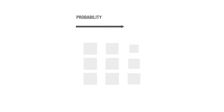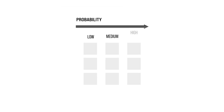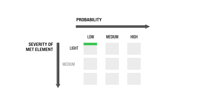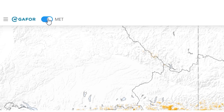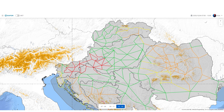Each weather polygon is defined by a probability of occurrence and severity or category of the phenomenon. For the most severe phenomena, even the slightest probability can impact the route. To instantly see how the weather conditions impact your route, switch to the route view.